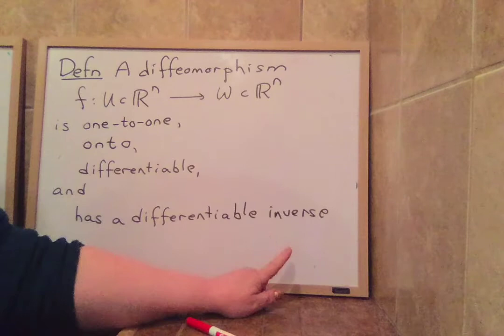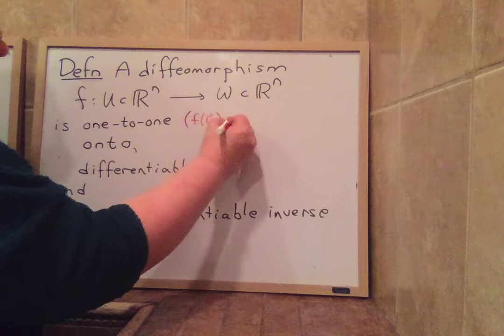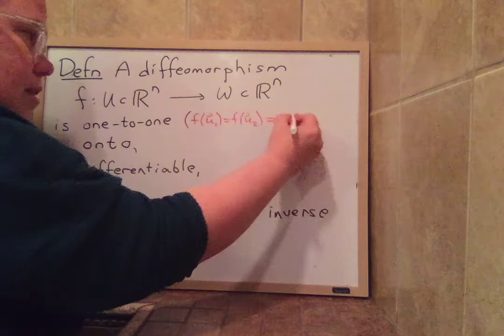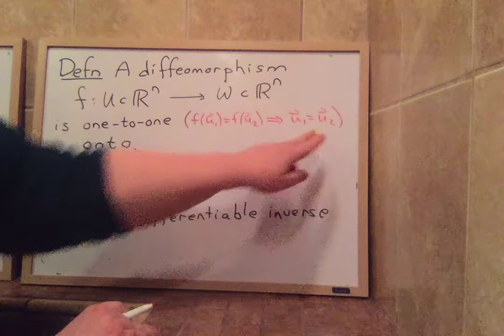Let me remind you what all these things are. One-to-one means that f of one input equal f of a second input implies that the two inputs are the same. So it doesn't ever send two different points to the same point. If they're the same outputs, then they're the same inputs. That's what one-to-one means.